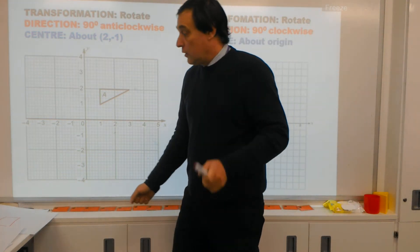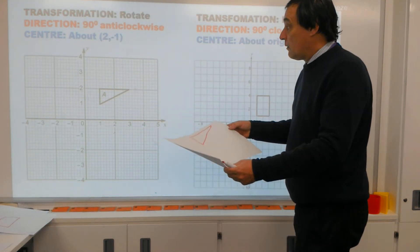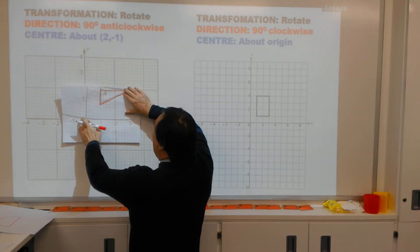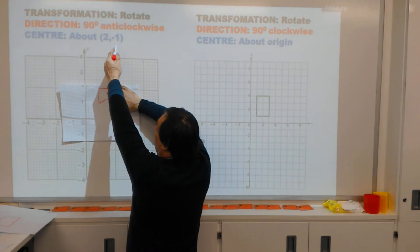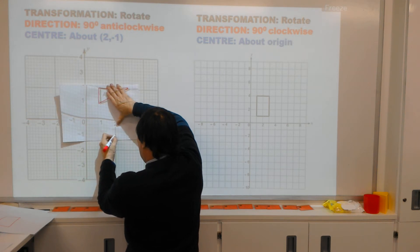OK. So the first thing we're going to do, we trace our shape. I've done this earlier to save a bit of time. We trace our shape. Your center, you mark it on this tracing. So we've got 2, minus 1. 2 and minus 1. And mark it with a little cross like that.